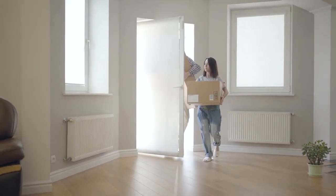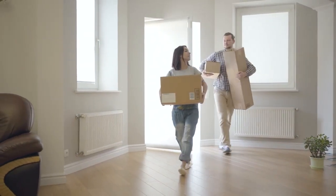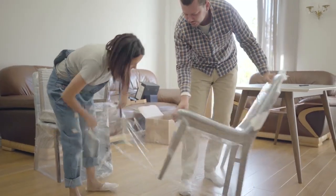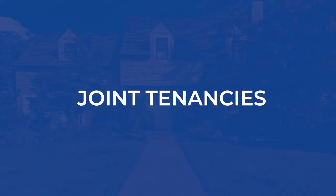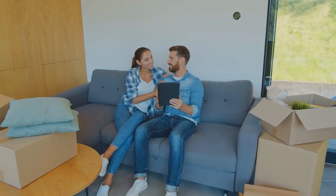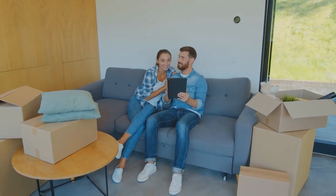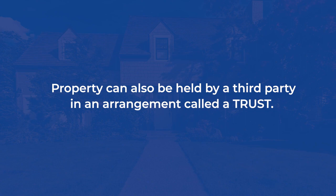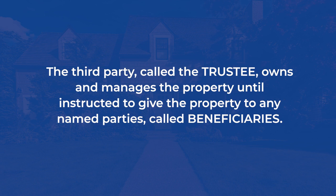Tenancy by the entirety is a special kind of joint tenancy between married spouses. Both joint tenancy and tenancy by the entirety grant right of survivorship, or the right to automatically inherit interest in the property from a joint tenant who dies. Tenancy in common doesn't equally divide the interest in the property and there is no right of survivorship, but the tenants can transfer their interest without the permission of the other tenants. Property can also be held by a third party in an arrangement called a trust. The third party, called the trustee, owns and manages the property until instructed to give the property to any named parties called beneficiaries.